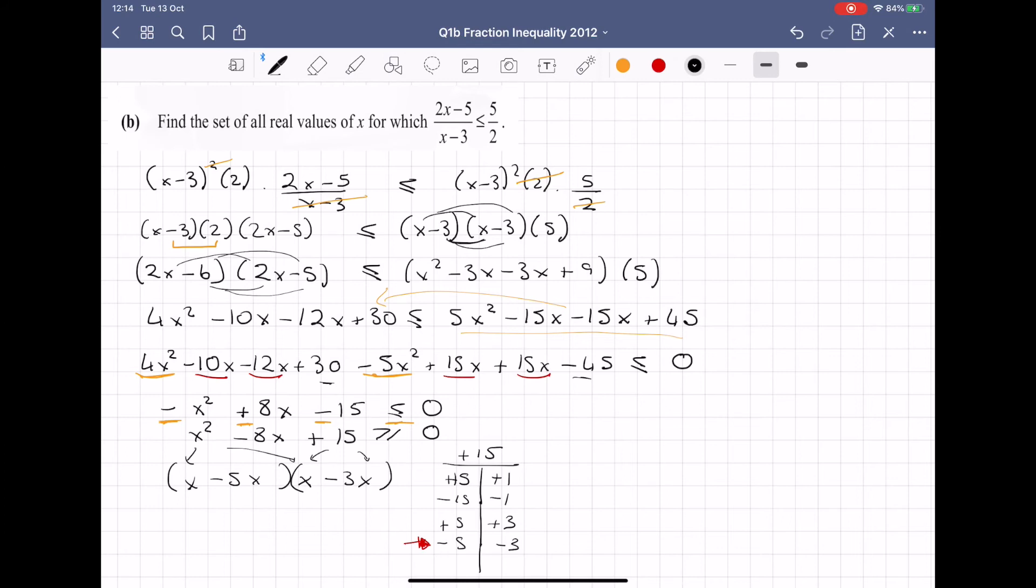So I'm getting, my apologies, not an x. I'm getting x - 5 and x = 3. And these are what I'll still like to call my critical values.